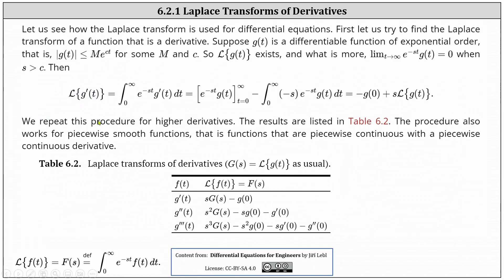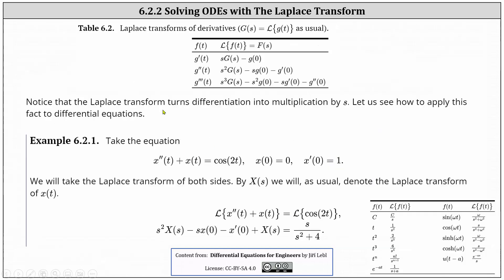Now let's go back to our first slide. We can repeat this procedure for higher derivatives. The results are listed in the table below: the Laplace transform of g prime of t equals s times big G of s minus g of zero; the Laplace transform of g double prime of t equals s squared times big G of s minus s times g of zero minus g prime of zero; and the Laplace transform of g triple prime of t equals s cubed times big G of s minus s squared times g of zero minus s times g prime of zero minus g double prime of zero. The procedure also works for piecewise smooth functions — that is, functions that are piecewise continuous with a piecewise continuous derivative. Notice the Laplace transform turns differentiation into multiplication by s.